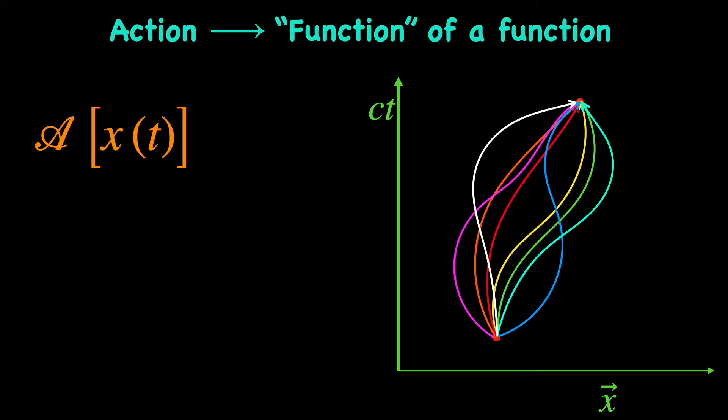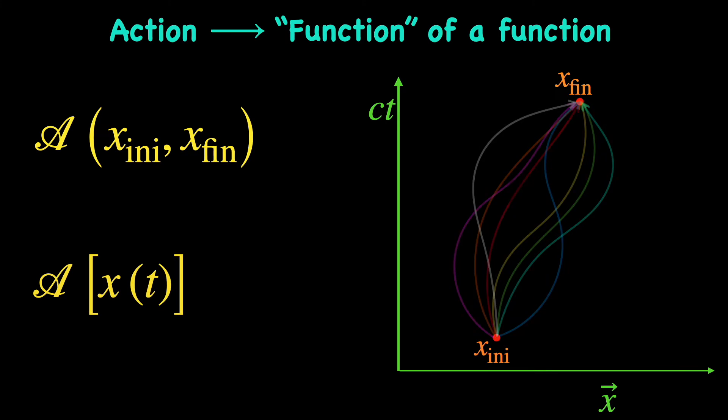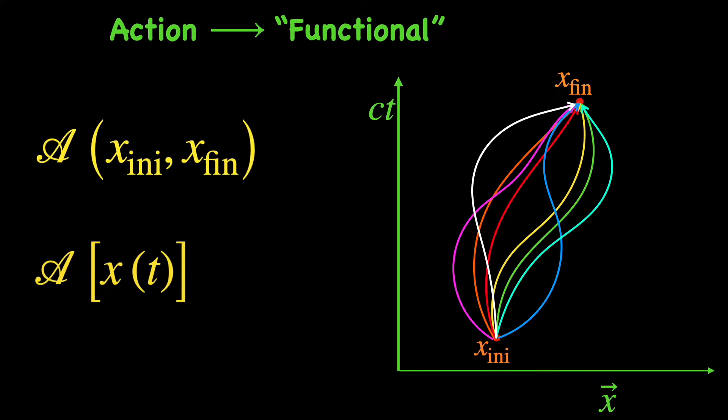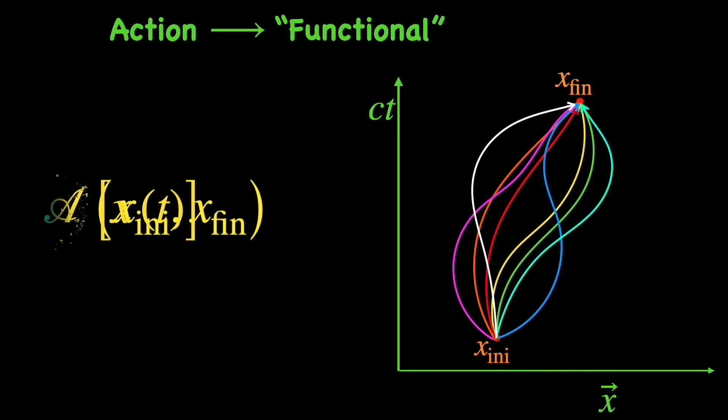Thus the action is simply a function in the ordinary sense of the initial and final event points, let's say x_initial and x_final, but in addition to that it is also a function of the function x(t) that represents the trajectory we calculate the action for. The technical word for the phrase 'function of a function' is functional, and symbolically we write the action functional with the first entry indicating the trajectory, a function of time, and the other two indicating the initial and final space-time event points.